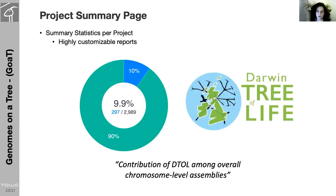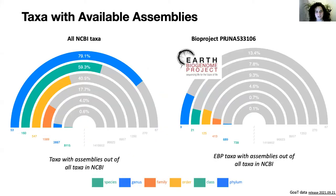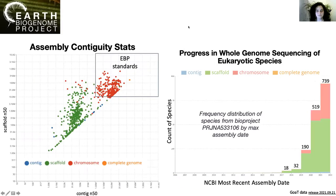We are adding to GOAT project summary pages, where each project can display information and customize graphs and reports as they choose. There are many options of customizable plots, from simple species counts and pie charts — such as the number of chromosomal-level assemblies that Darwin Tree of Life has contributed among all chromosome-level assemblies in INSDC — to rainbow plots showing progress in the number of available genomes per taxonomic rank, overall and per project. More complex plots show correlations, frequency distributions over time, assembly contiguity stats, and the progress of sequencing eukaryotic species by the Earth Biogenome Project over time.